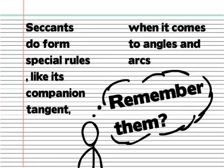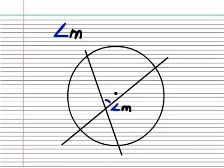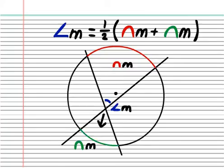Remember them? Anyway, secants form several relationships, as well as tangents, with angle measurement and arc measurement. When two secants intersect inside the circle, the measure of the angle formed is half the sum of the intercepted arc and the opposite arc.